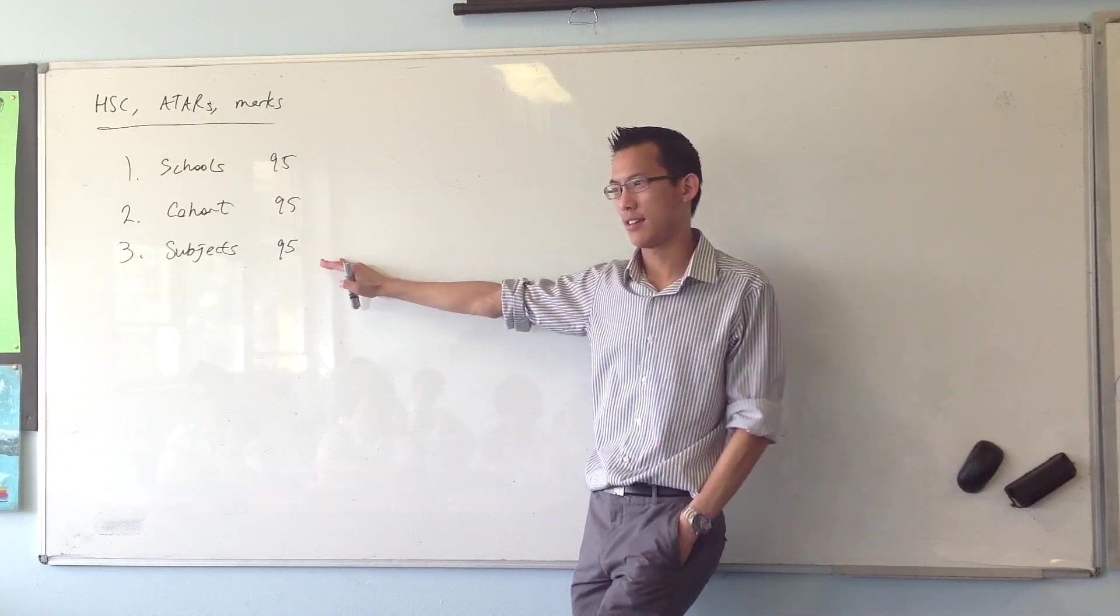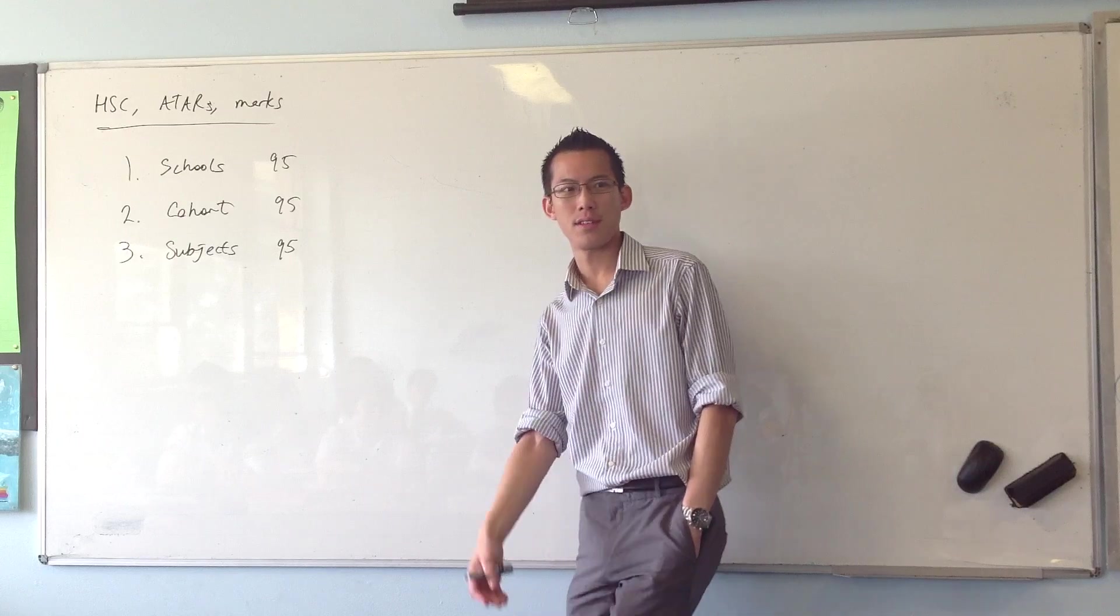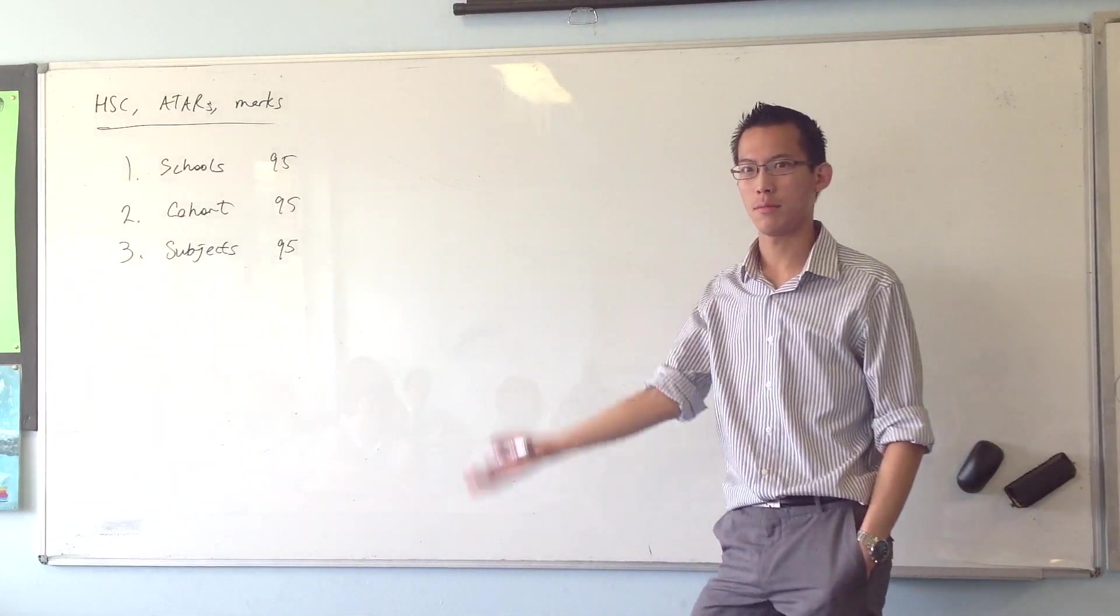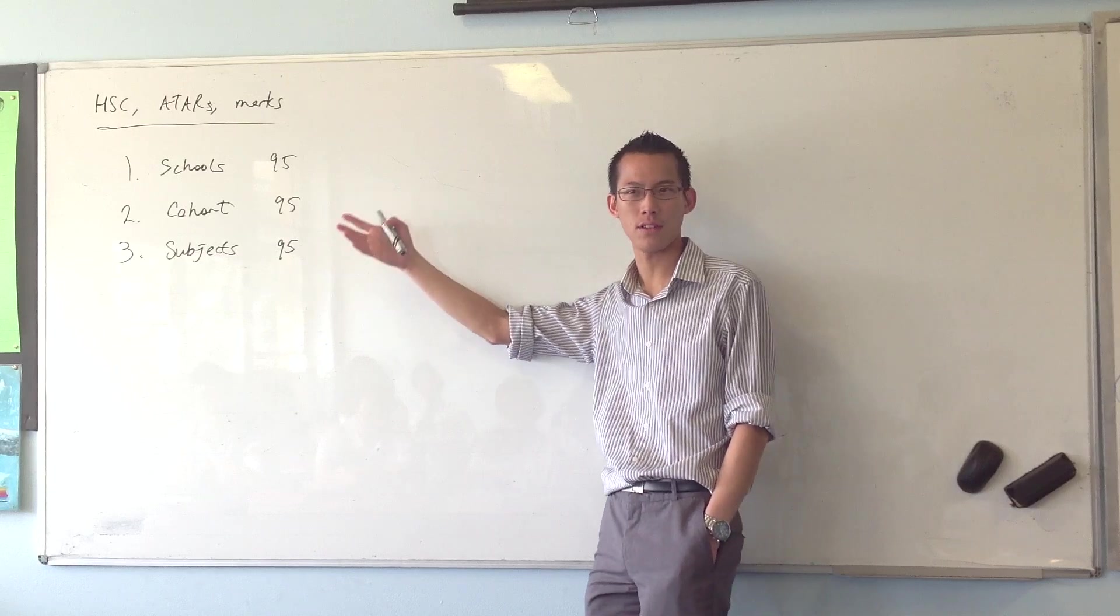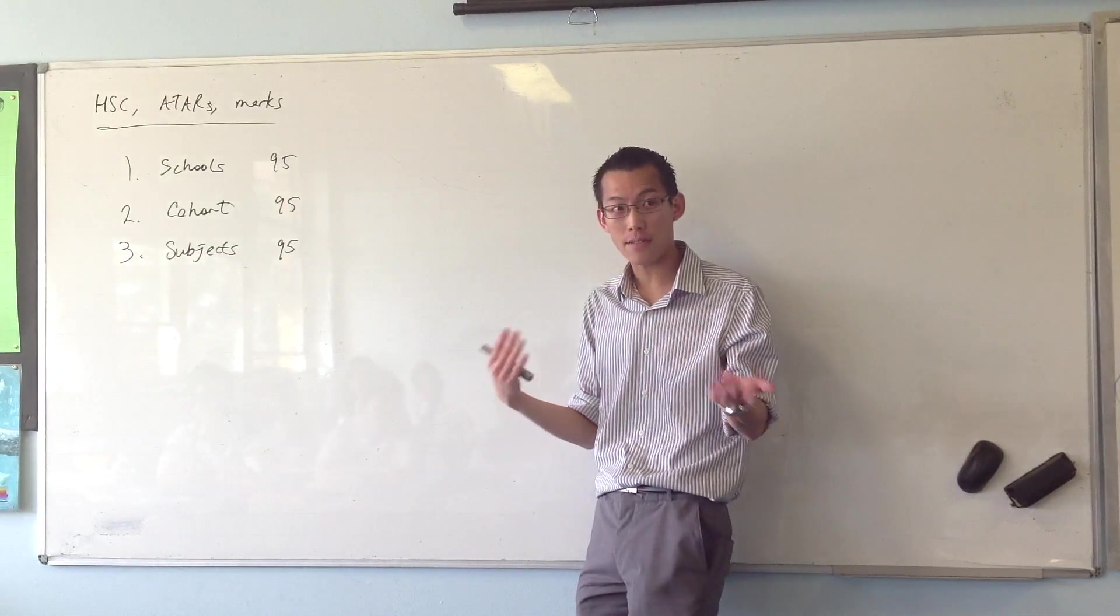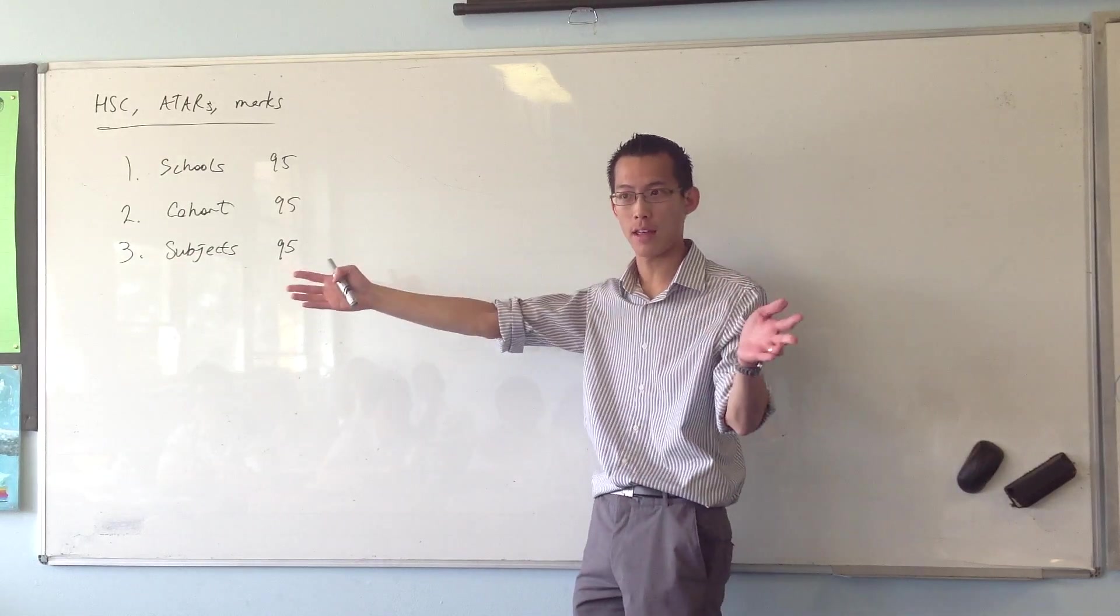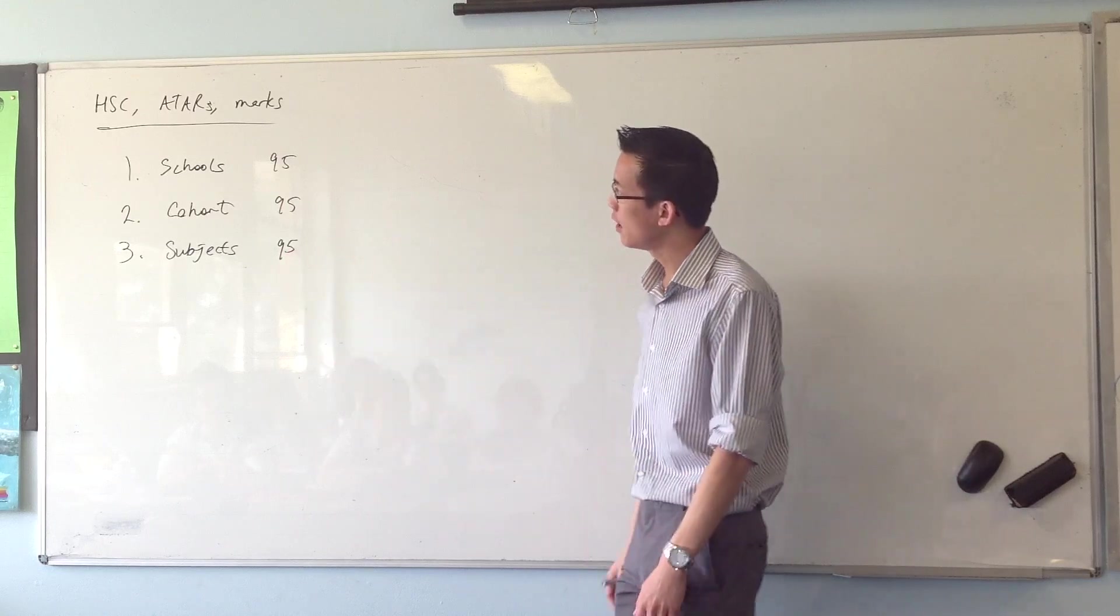So 95 in maths extension 1 versus 95 in two unit maths. Well actually, it wouldn't be 95 for maths extension 1, it would be 47 I guess because out of 50. But clearly those 95s are different. And you can multiply it across different subjects.